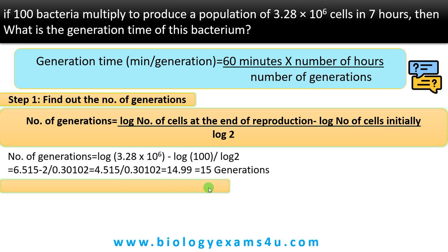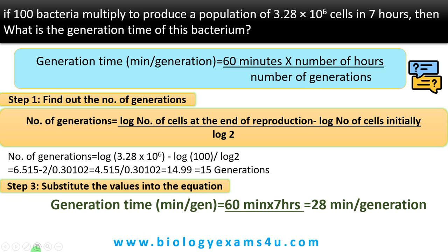Now it's very easy — just substitute the values into the equation. Generation time (minutes per generation) = 60 minutes × 7 hours, divided by the number of generations, which is 15. The answer is 28 minutes per generation.